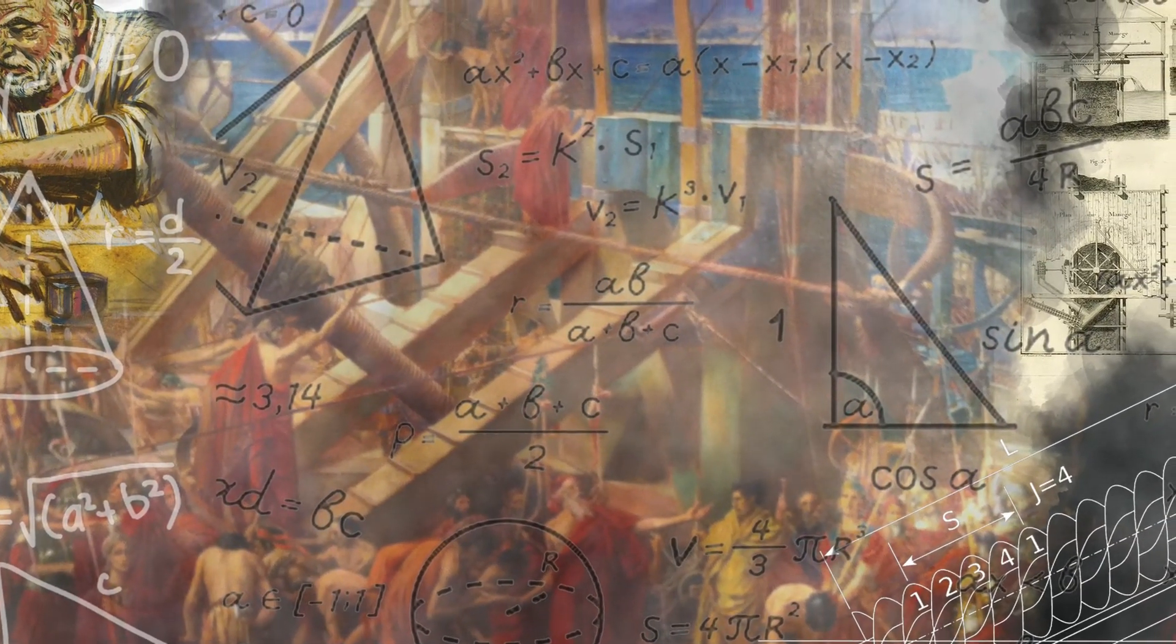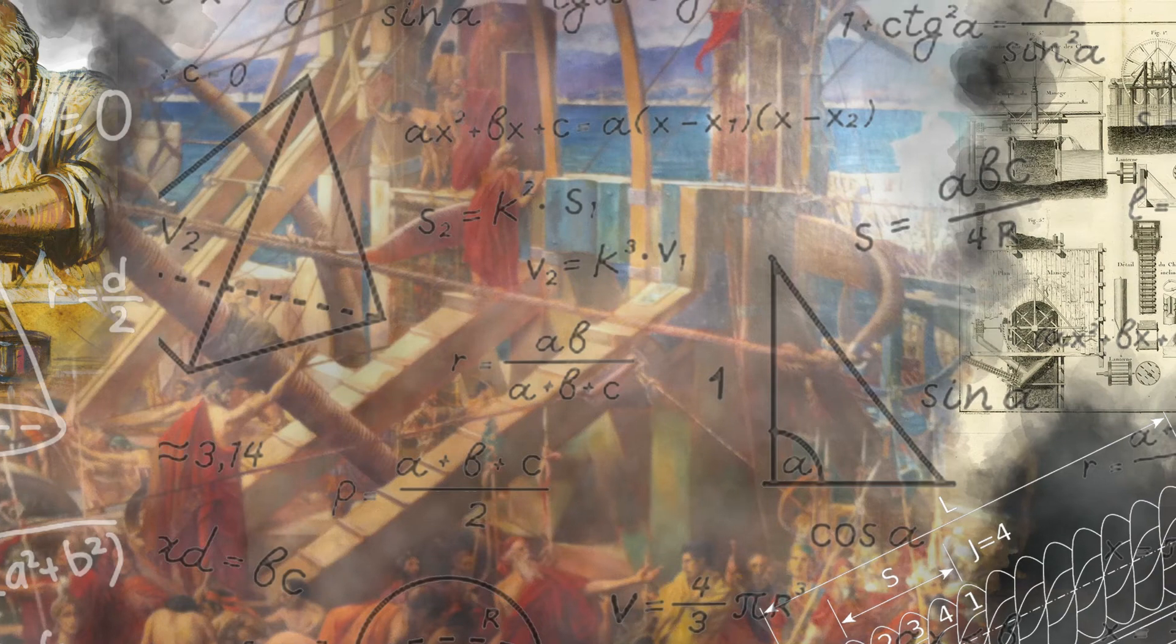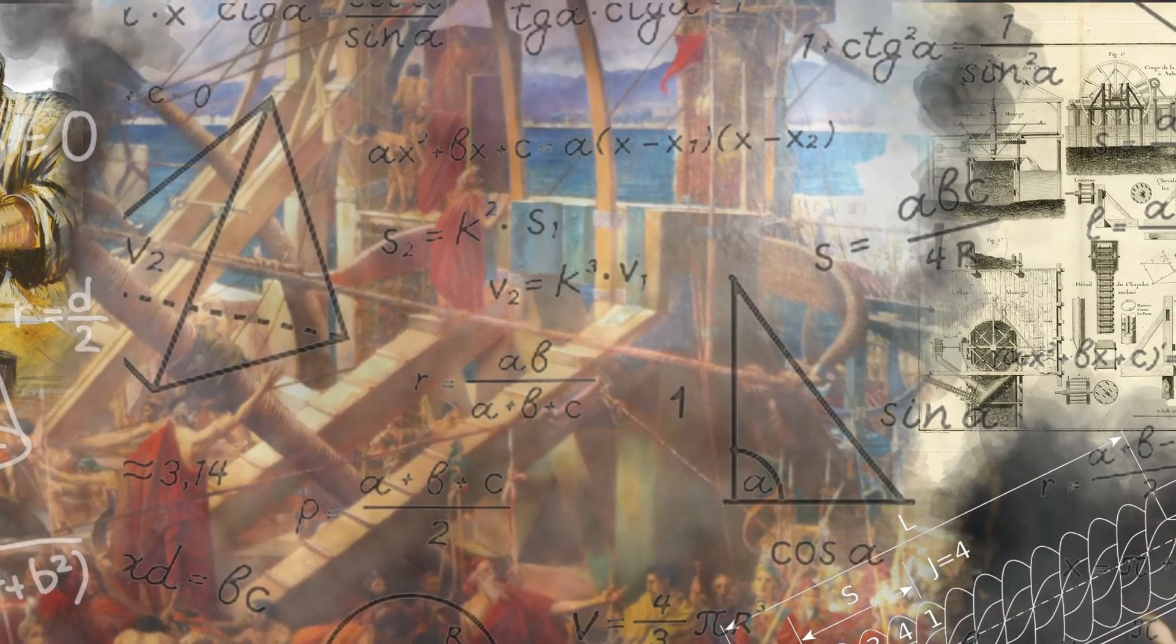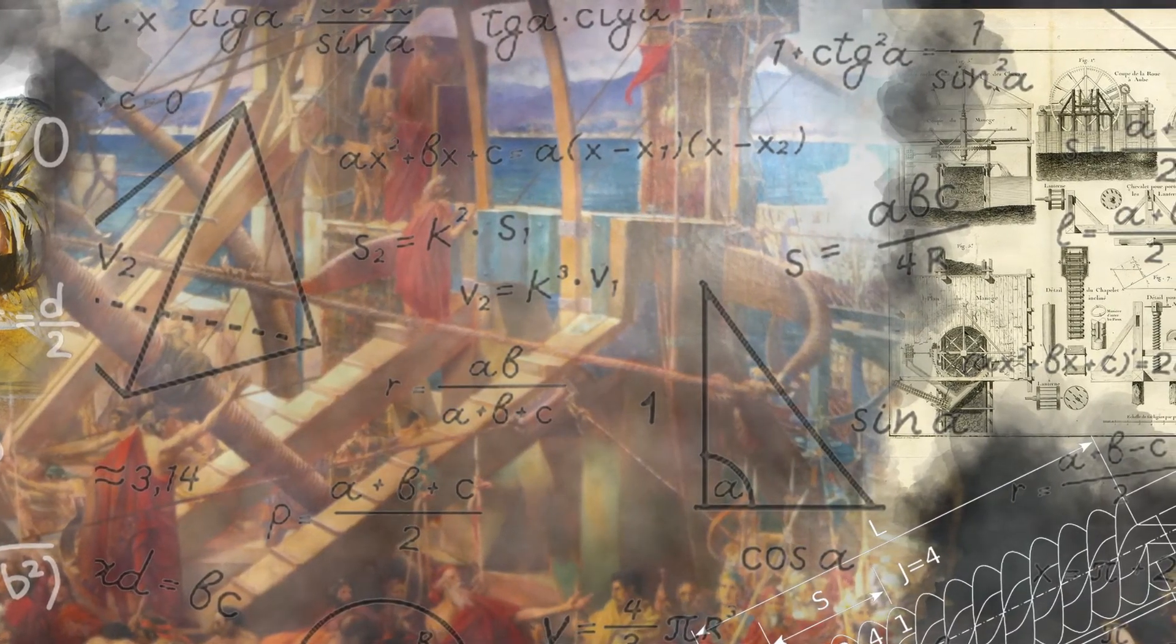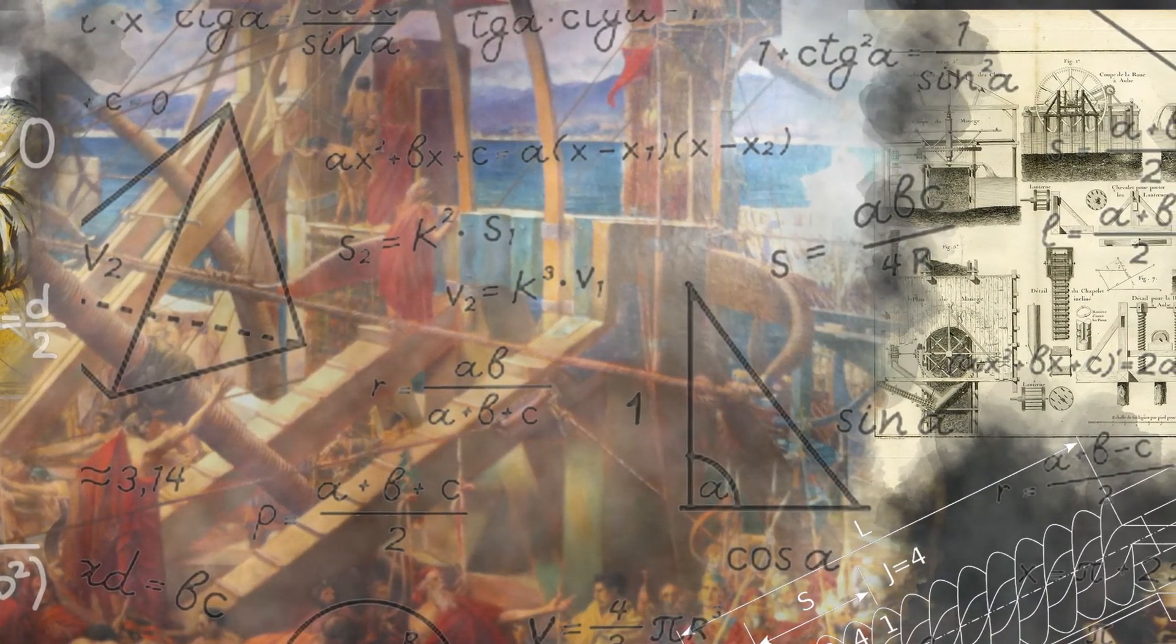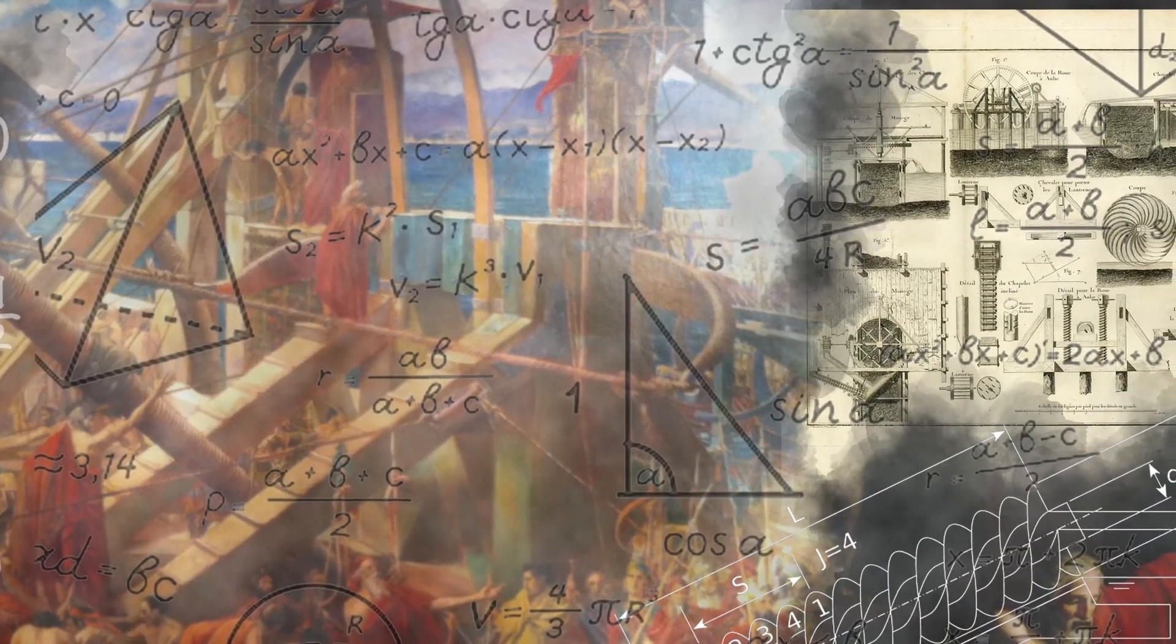There is no definitive account of the death of Archimedes. The most well-known version has it that he was working on a mathematical problem involving circles when Syracuse was taken by the Romans. He was ordered by a Roman soldier to appear before Marcellus. True to his nature, he refused, stating that he had to continue working on the problem that was perplexing him. At that, the soldier is said to have run him through with his sword.